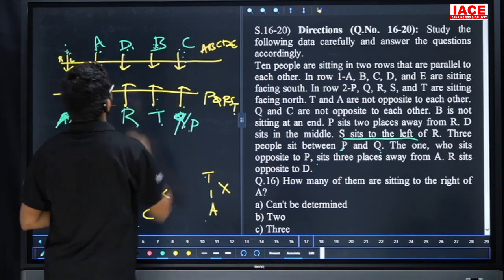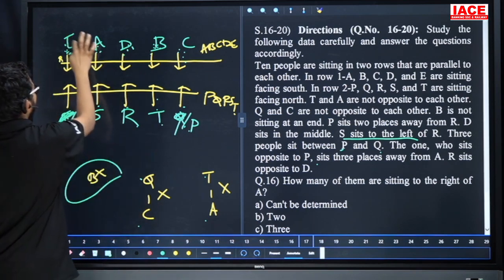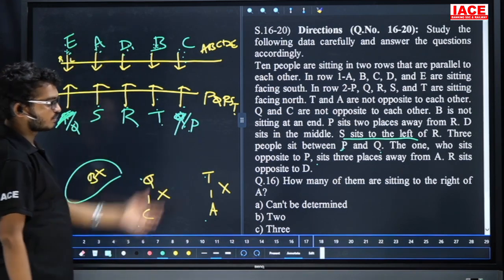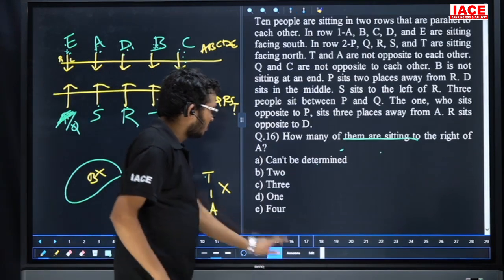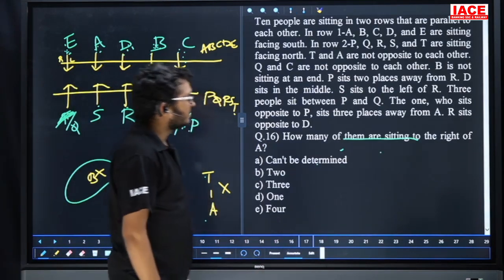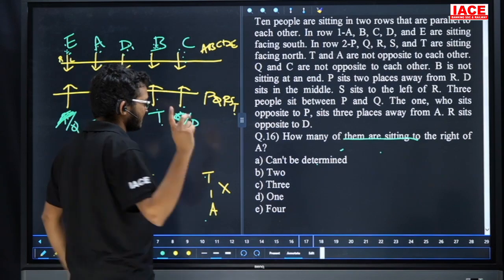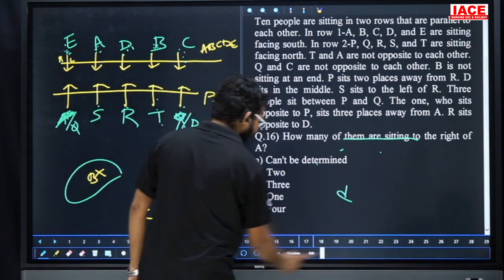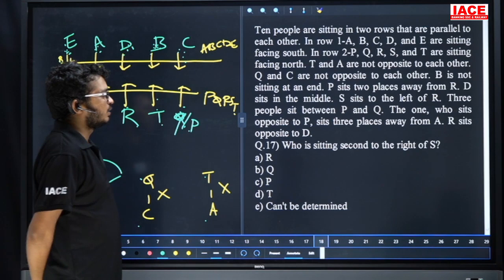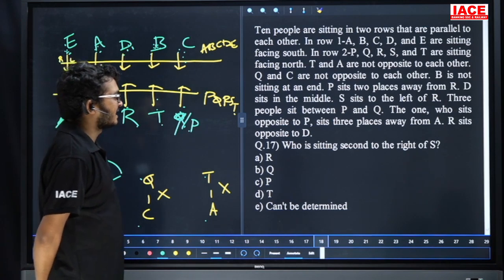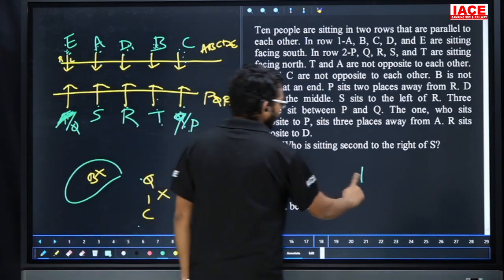The arrangement is confirmed. Question number 16: how many persons are sitting to the right of A? Only one person. Answer is option D. Question number 17: who is sitting second to the right of S? Answer is T. Option D.